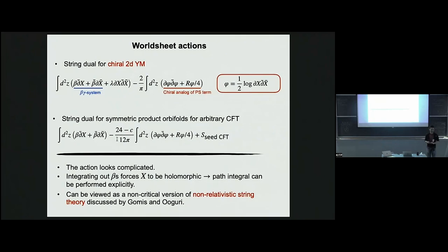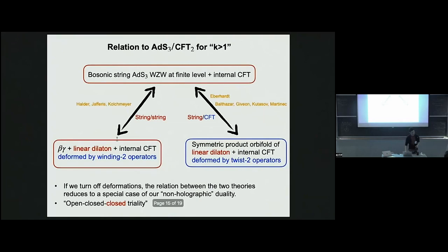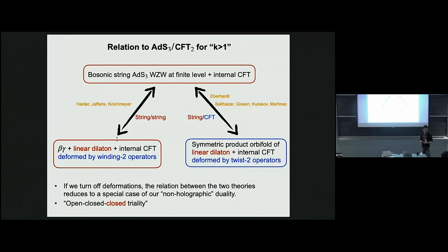Q&A: Regarding the slide about the symmetric product orbifold — there was old work by Giveon, Kutasov, and Seiberg with a string theory involving a beta-gamma system, linear dilaton, and internal CFT. Is that the same? The left-hand side is supposed to be a generalization of the FZZ duality — it's the uplift of FZZ duality, where you remove a U(1) process. It is somewhat related but not identical.